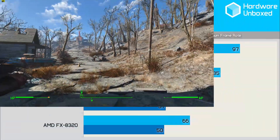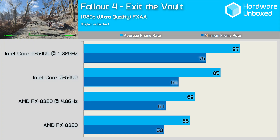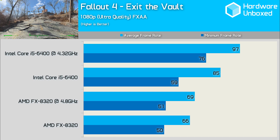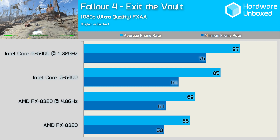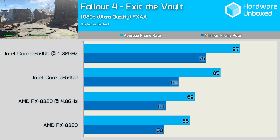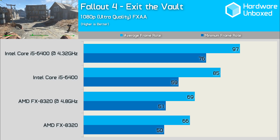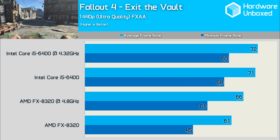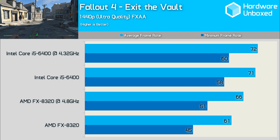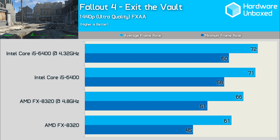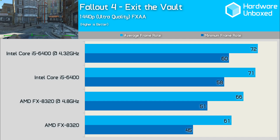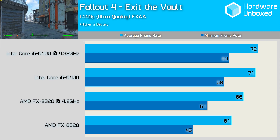The Core i5-6400 also delivered virtually the same performance in both its stock and overclocked configurations in Boston. Moving to the vault exit section, the performance picture is significantly different: the FX8320 saw a 50fps minimum with an average of over 60fps. It is worth noting that the Core i5-6400, at its standard operating frequencies, was still faster than the overclocked FX8320. At 1440p, the vault section still plays reasonably well on the FX8320, and the 4.8GHz overclock delivers a little extra performance — though the stock Core i5-6400 is still 14% faster than the heavily overclocked FX processor.